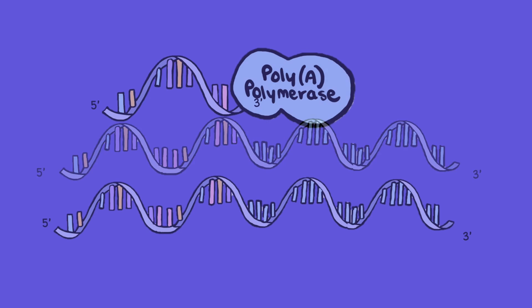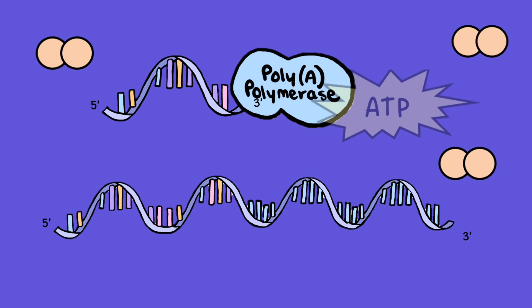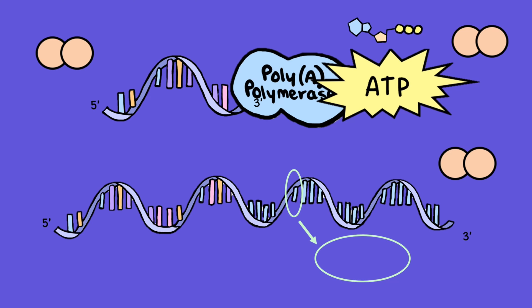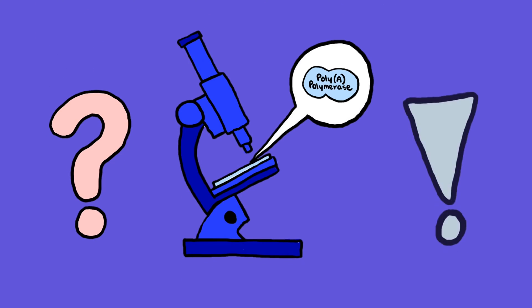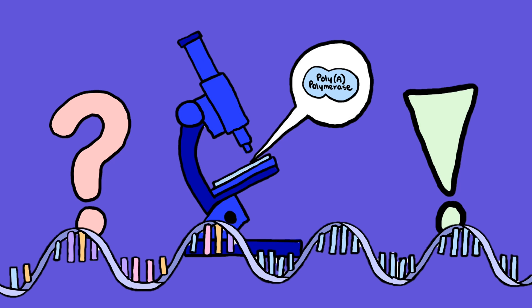This enzyme relies on the presence of magnesium ions, ATP as its substrate, and any RNA containing three prime hydroxyl termini as a primer. But how did we discover such a small yet crucial enzyme? Let's trace the key milestones in polyA polymerase and mRNA polyadenylation discovery.